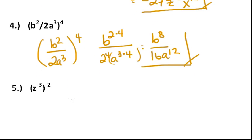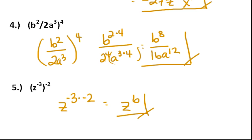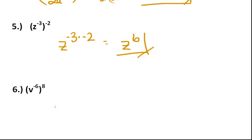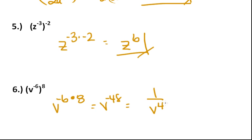For this next one, z to the minus three times minus two is just going to be z to the sixth. And then in the last one, z to the minus six to the eighth would be z to the minus six times eight, which is z to the minus forty-eight — or one over z to the forty-eighth as the answer.